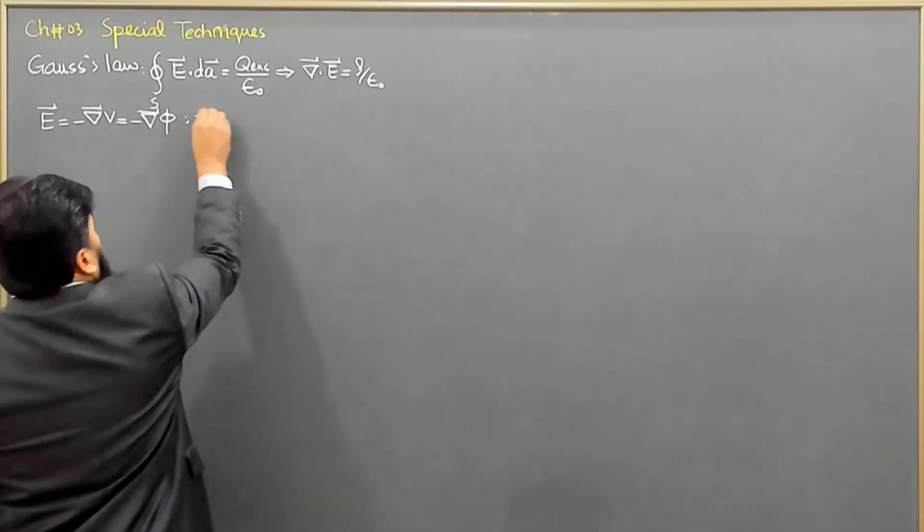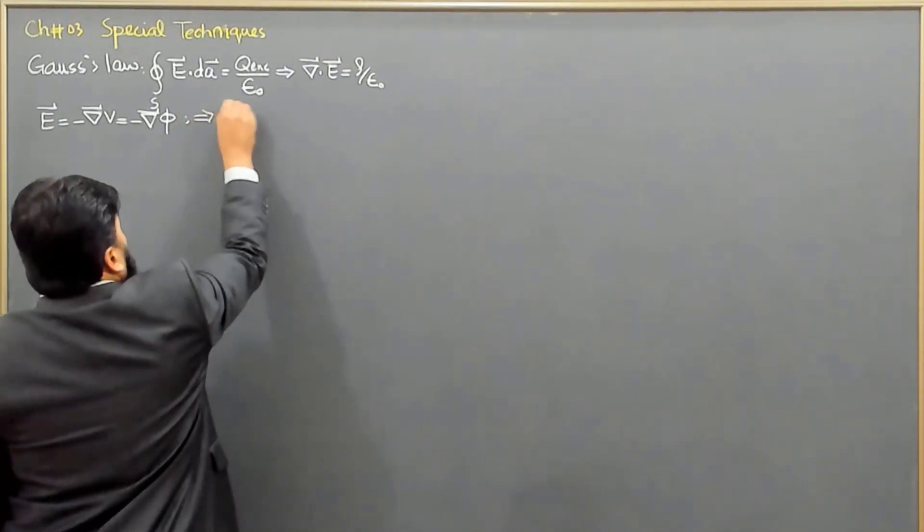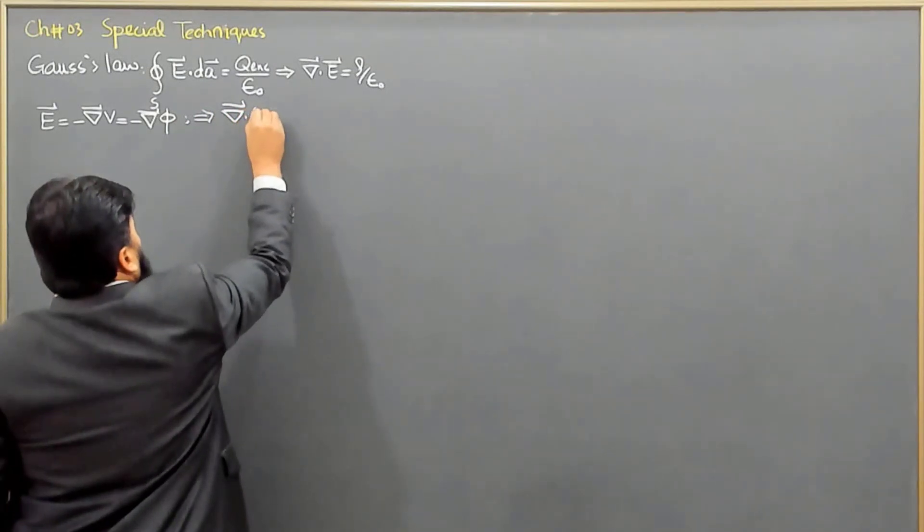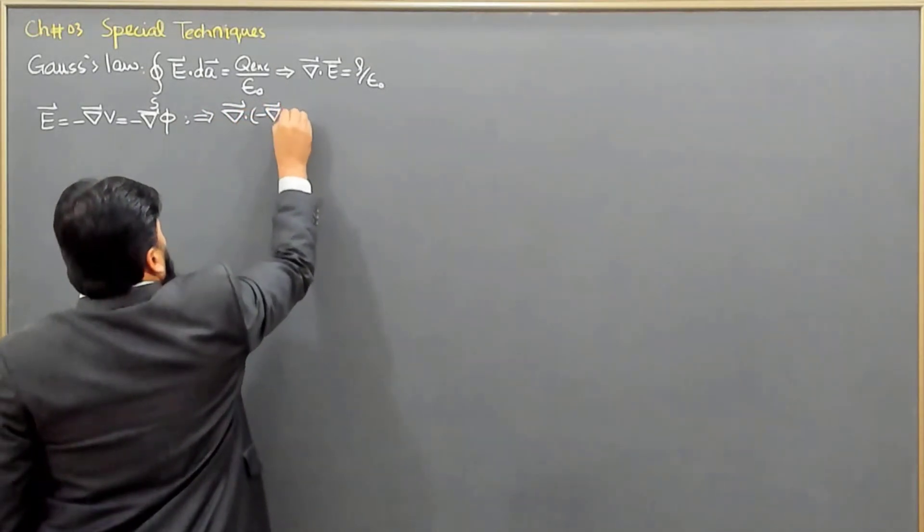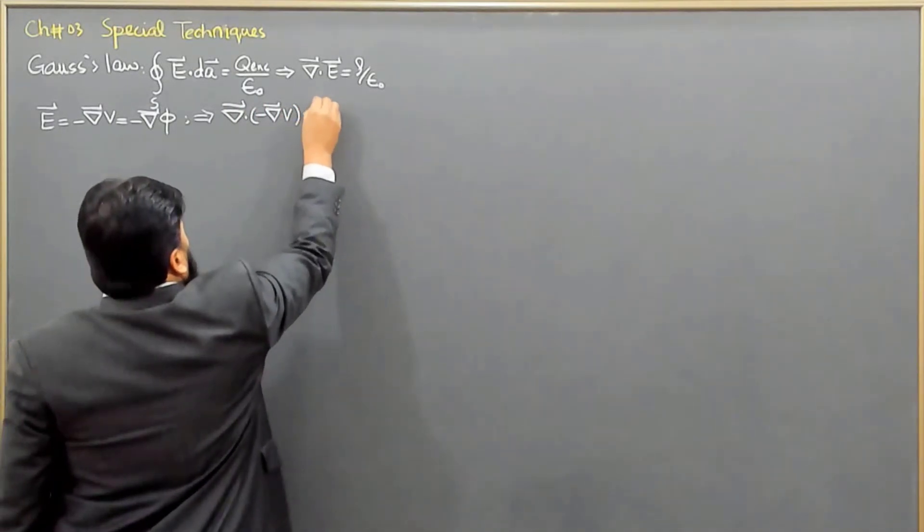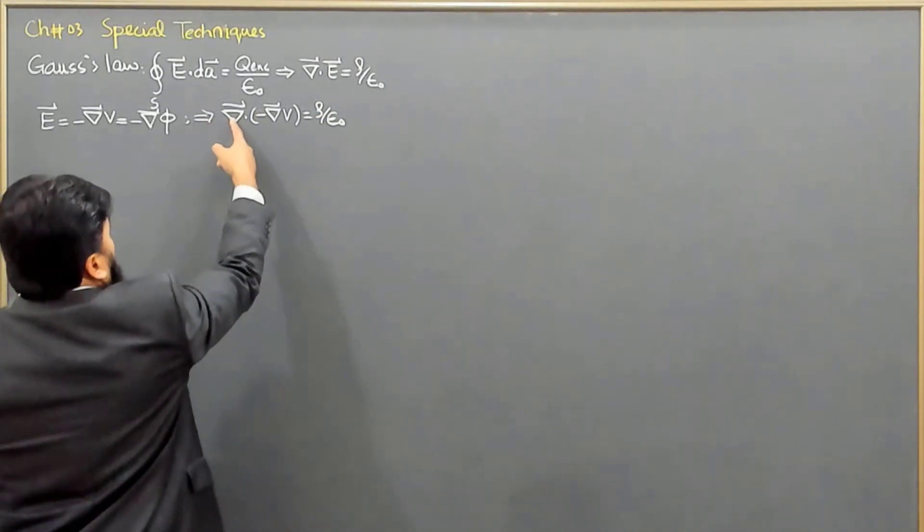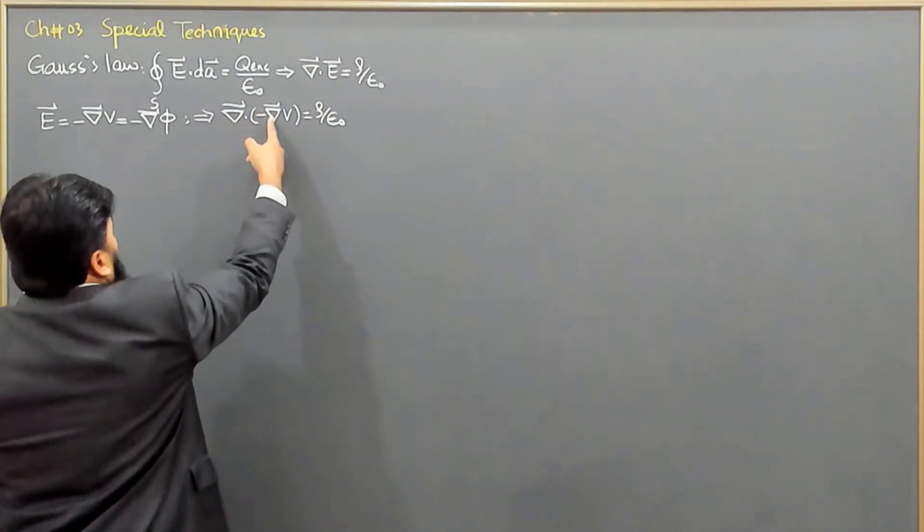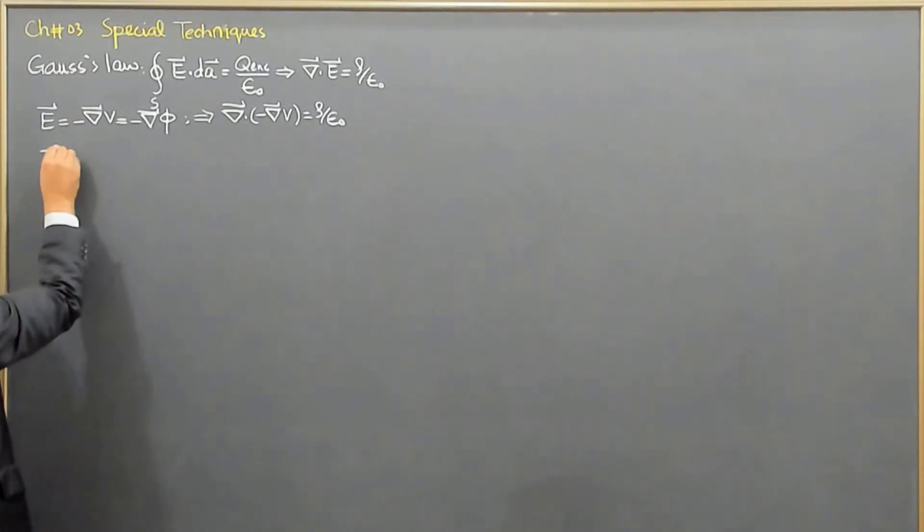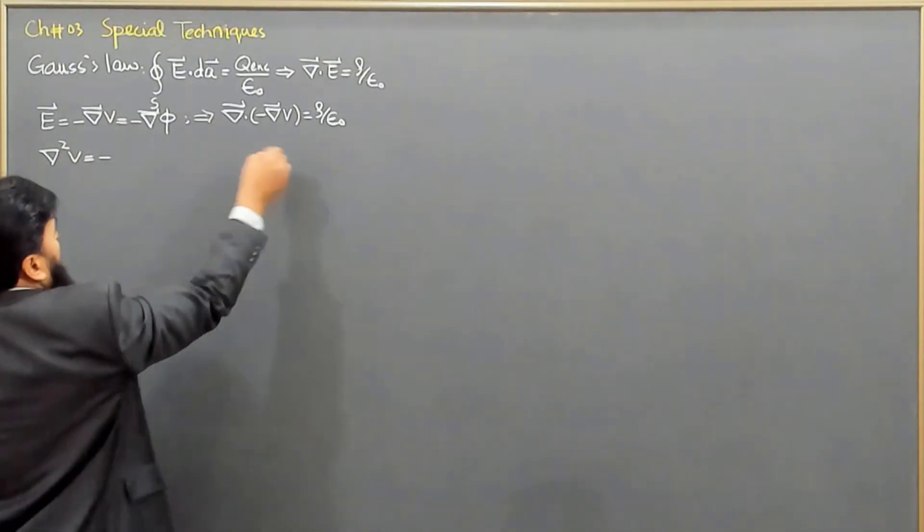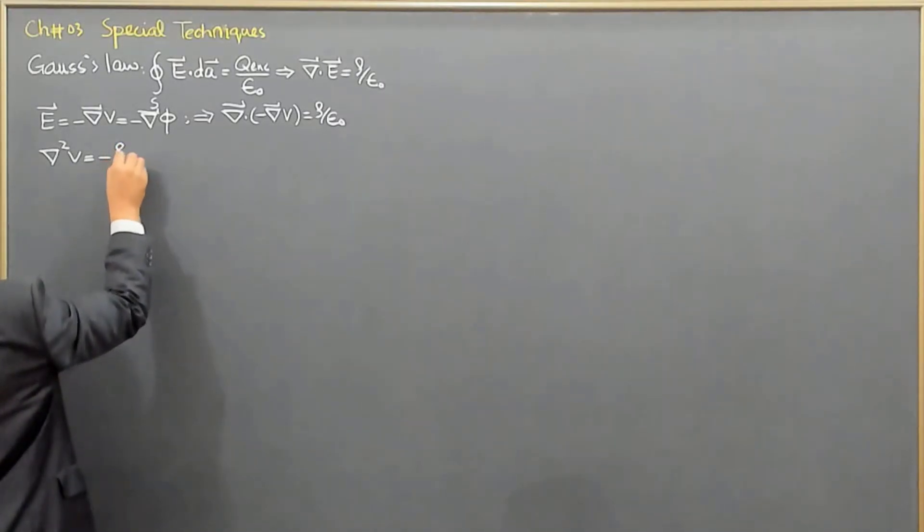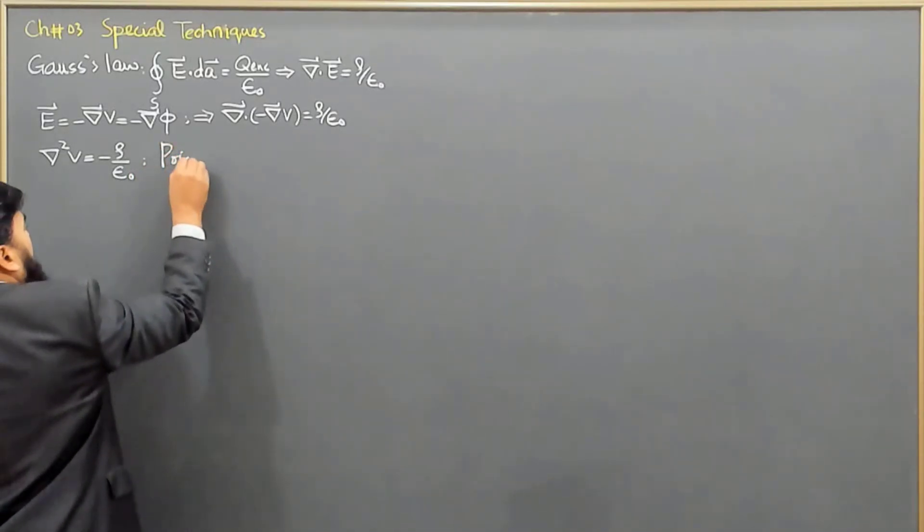And this will make our divergence of E is minus divergence of gradient of V equals rho over epsilon naught. And then minus will come outside and del dot del will come out to be del square. So, del square V equals the minus, we move to the other side, minus rho over epsilon naught. And this we call the Poisson's equation.